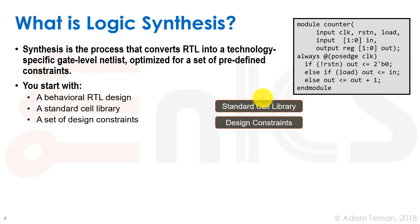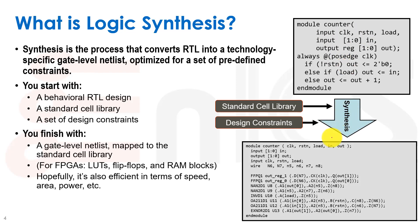If we look at this graphically, we have a standard cell library — which we'll discuss in depth today — and a set of design constraints, which we'll discuss in lecture 5. We have our RTL description which describes a simple counter. We take that, put it into our synthesis tool, and it spits out a gate-level netlist mapped to the standard cell library, with all standard cells instantiated and all connectivity between them.